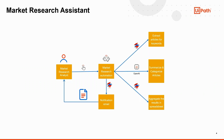Let's see an overview of the process. The market research analyst configures the parameters of the automation, such as the keywords to search for, the maximum number of words for the summary, and the email address where the results are sent, then triggers it. The bot will search for each keyword and extract the articles. Afterwards, each article is summarized and included in one or more categories using Generative AI. At the end, the results are aggregated into a spreadsheet and sent to the provided email address.